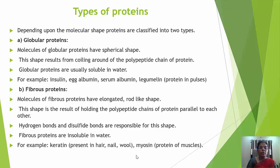The second type is fibrous proteins. Molecules of fibrous proteins have an elongated rod-like shape. This shape results from holding the polypeptide chains parallel to each other. Hydrogen bonds and disulfide bonds are responsible for this shape. Fibrous proteins are insoluble in water. Examples include keratin present in hair, nails, and wool, and myosin proteins present in muscles.